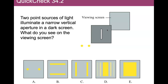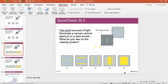Here's another question: we have two point sources of light that illuminate a narrow vertical aperture in a dark screen. What do we see on the viewing screen? There are rays going away from the two sources in all directions. We want to see what rays reach the viewing screen — forgetting about diffraction. If a ray goes through that slit, it will hit the viewing screen and make it bright; otherwise it's absorbed or reflected by the dark screen.